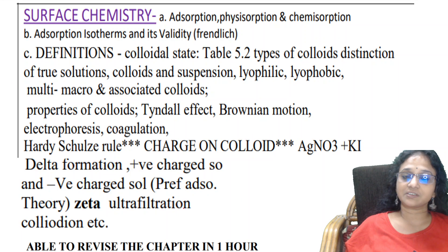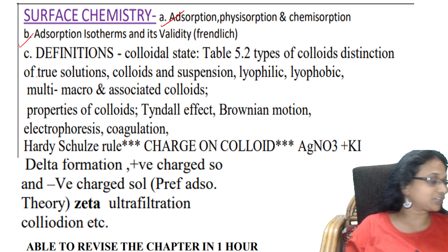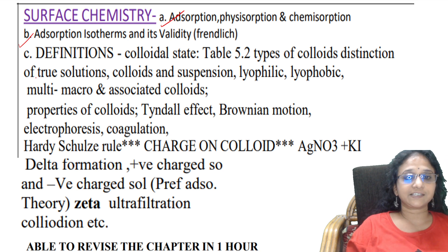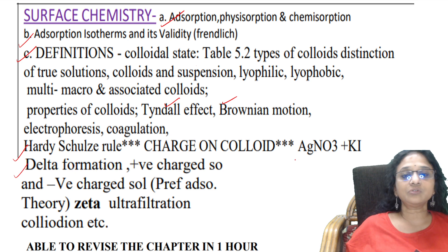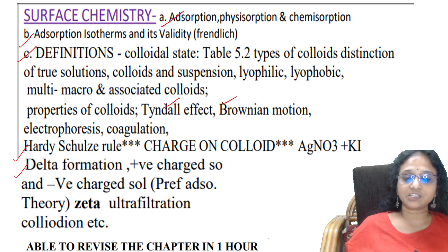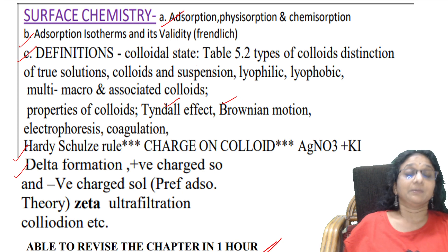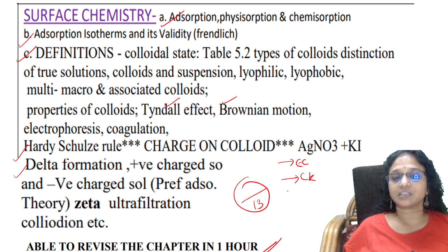After chemical kinetics, come to surface chemistry. Check concepts like adsorption isotherms and their validity - please practice it because they may ask in the exam. Learn definitions, colloidal state, macromolecular and multi-molecular suspensions, Hardy-Schulze rule, Tyndall effect, Brownian motion, and delta formation - they will give you any two questions from this topic. Complete this chapter in one hour. Note your marks: electrochemistry, chemical kinetics, surface chemistry - total is 13 marks.